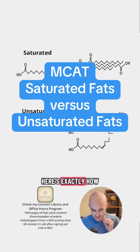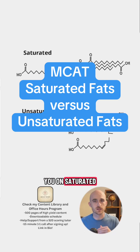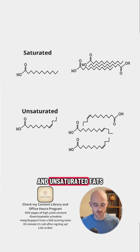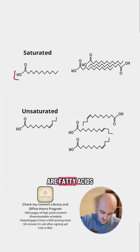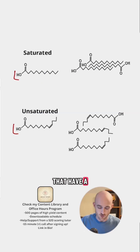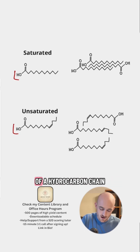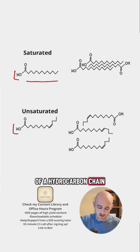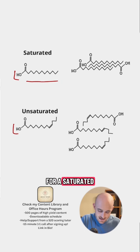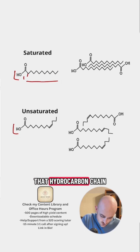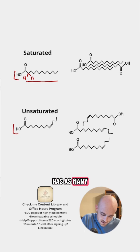Quick MCAT lesson — here's exactly how they're going to test you on saturated and unsaturated fats. Both of these are fatty acids that have a carboxylic acid functional group on the end of a hydrocarbon chain. For a saturated fatty acid, that hydrocarbon chain has as many hydrogens on it as possible.